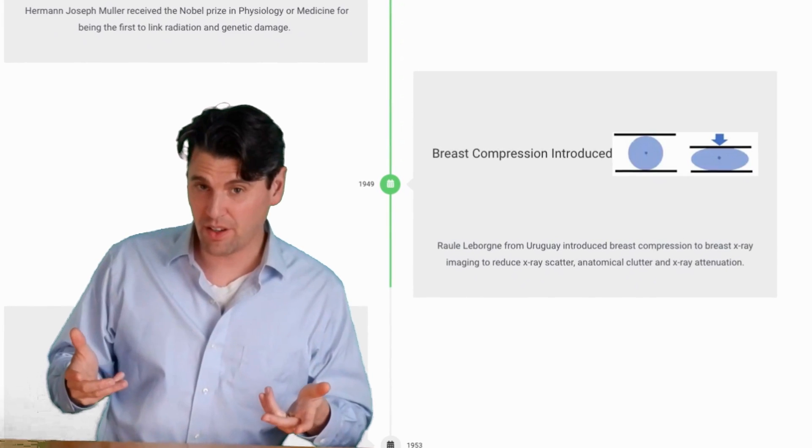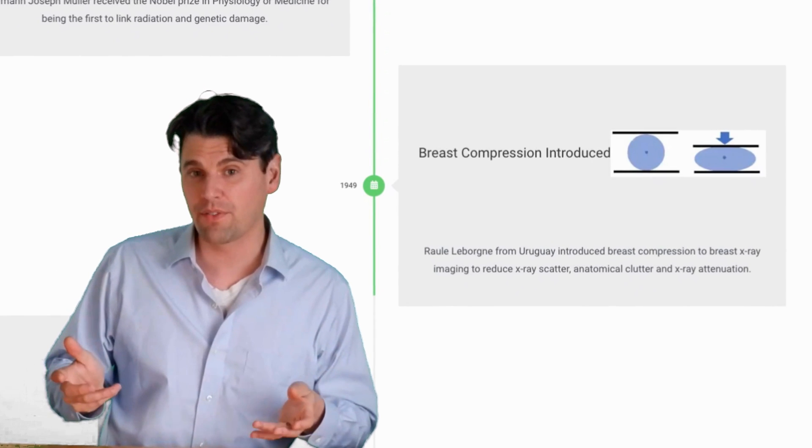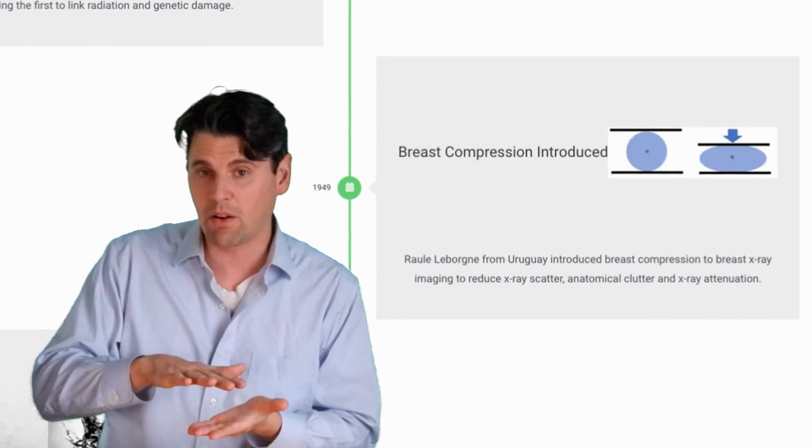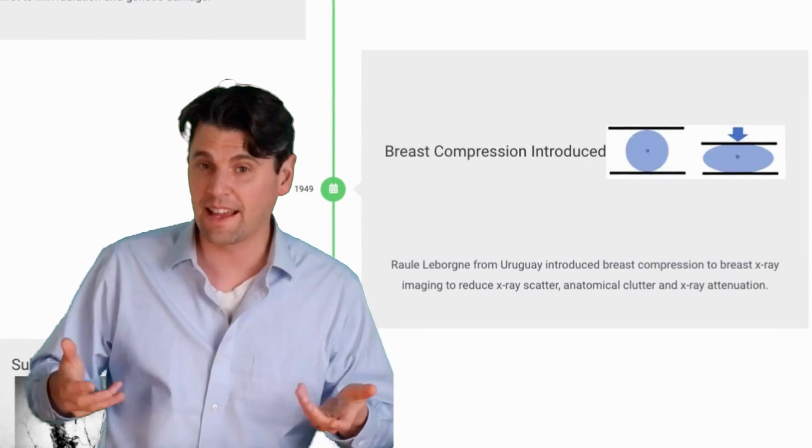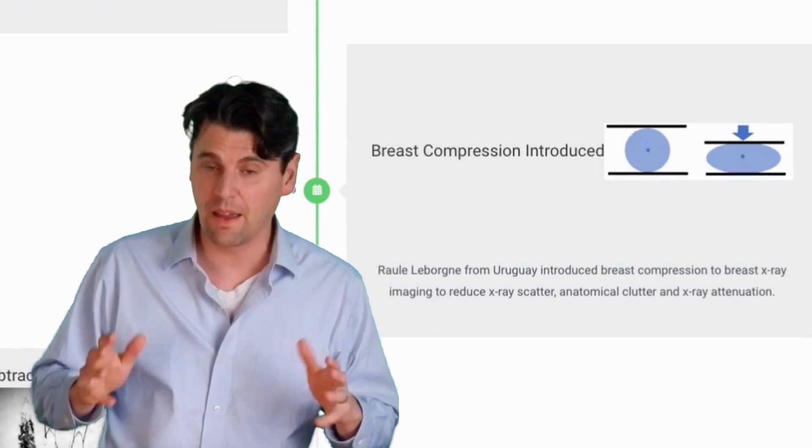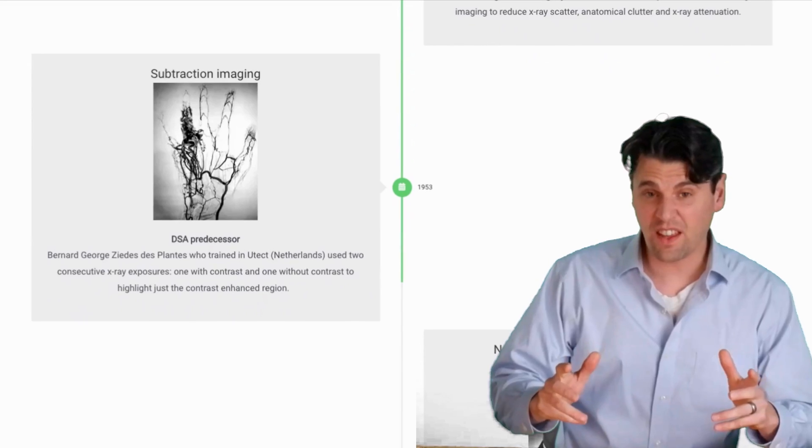In 1949, breast compression was introduced into mammography. This is in order to minimize the amount of scatter as well as the amount of anatomic overlap in the images of the breast.